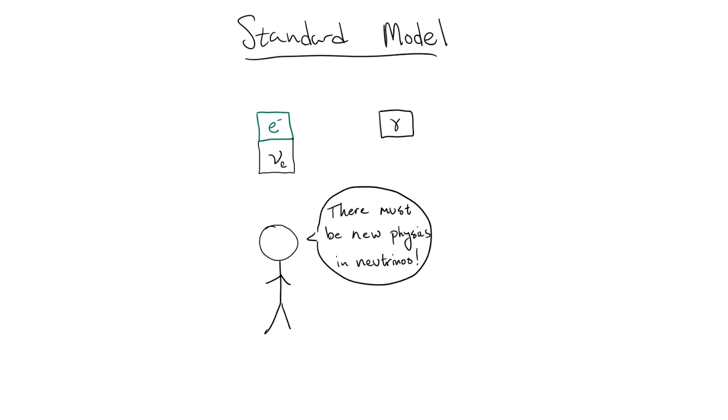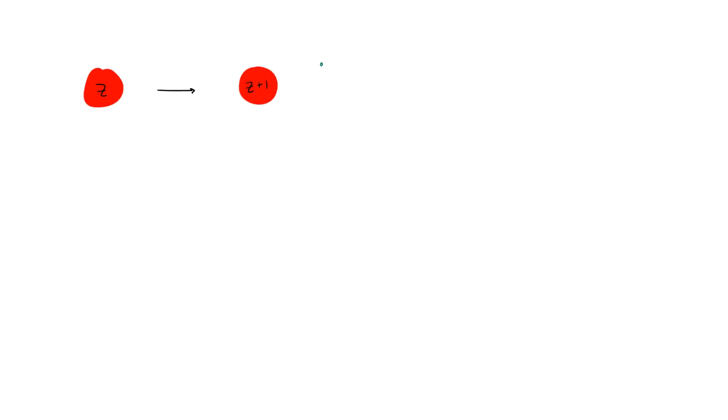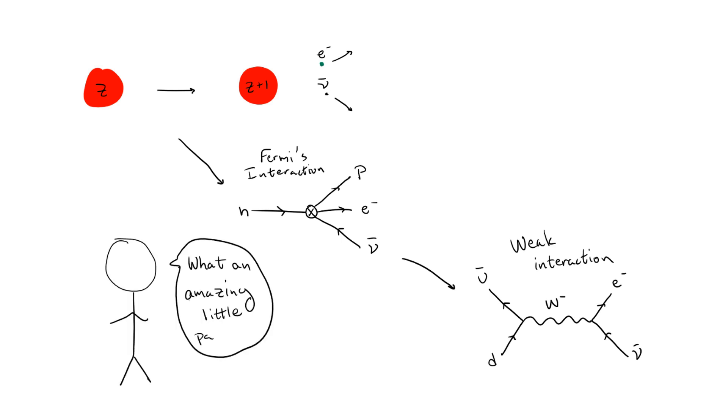The neutrino is a critical addition to the standard model of particle physics. Looking at beta decays and other neutrino interactions made it possible to construct and experimentally verify the weak interaction, a brand new fundamental interaction never before considered. The details of this are topics for later videos in this series, but for now we can be content with the promise held within this tiny, elusive particle.